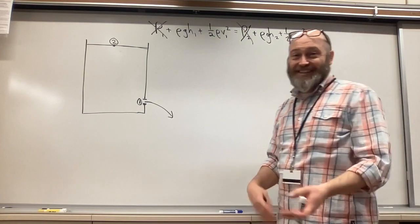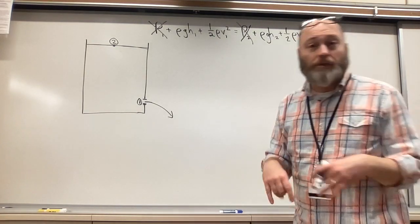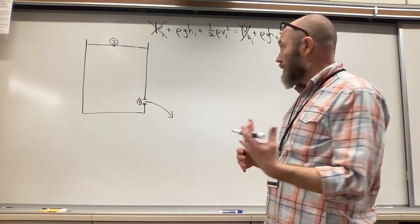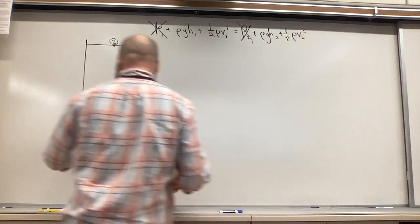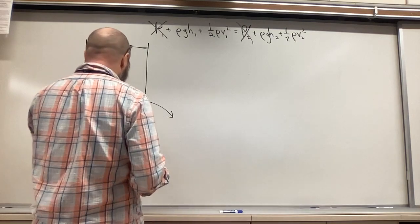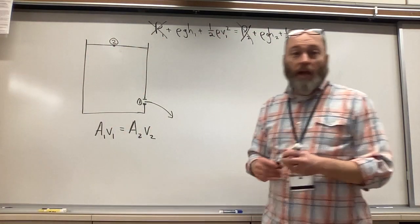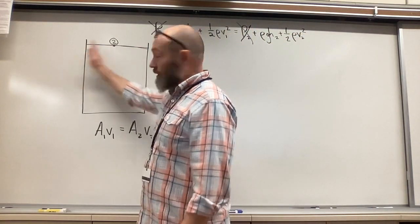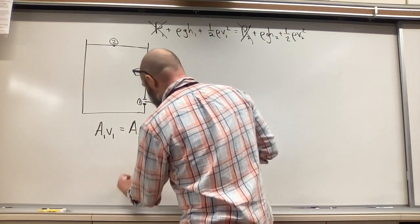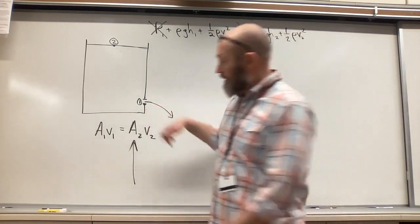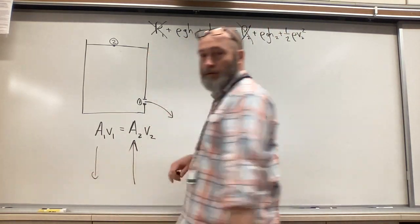So now I end up with this and this. But here's the next thing, and this is our assumption. We know our continuity equation, which was, if you remember, a1v1 equals a2v2. And we said the area here is huge compared to the area here, which is teeny.